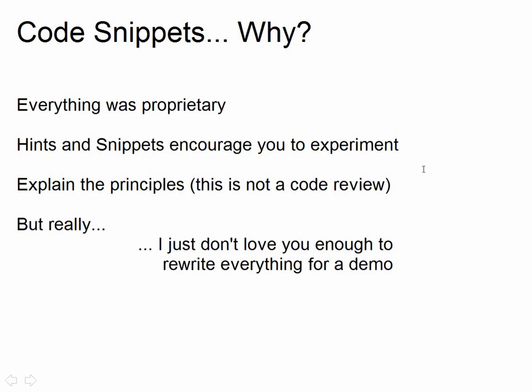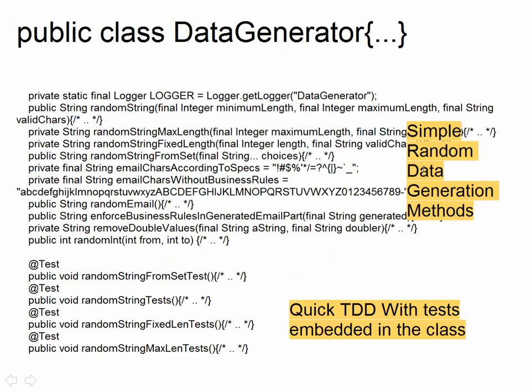Everything I'm going to show here are code snippets, because you'll then have to think them through in order to experiment with them. It's really about the principles that are involved. We have a data generator — I wrote a data generator class because I could have used a library to do the test data generation, but that seemed like overkill for what I wanted to do.